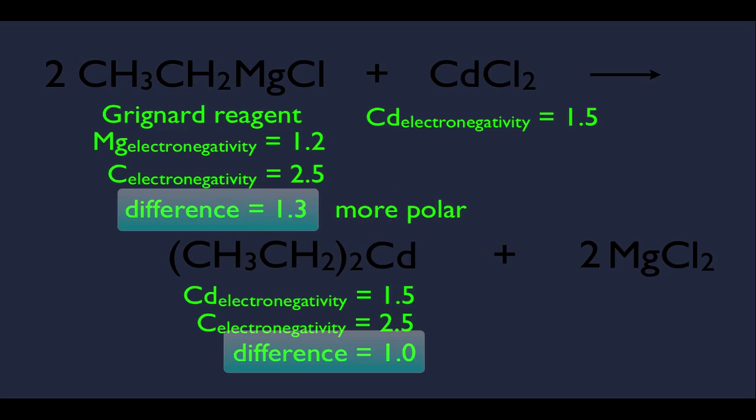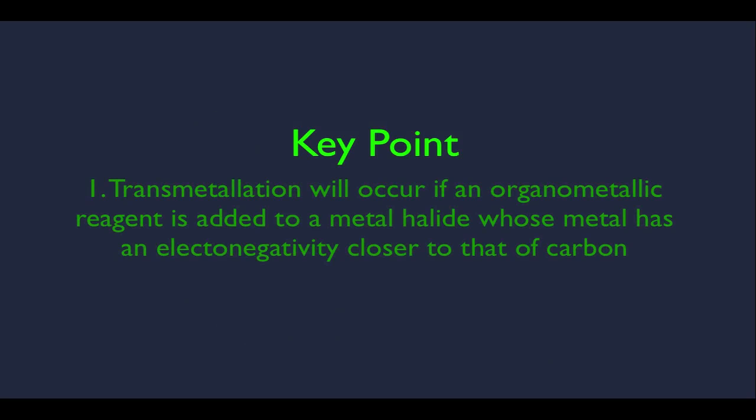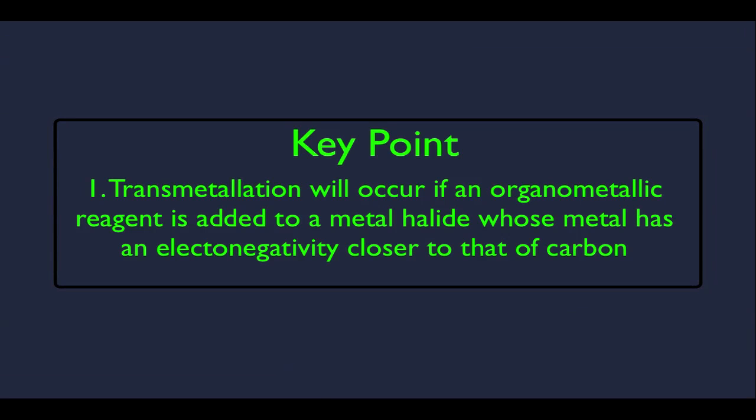So that's all that's happening here. We're starting with a more polar bond as a reactant and ending up with a product that has a less polar bond. There is an incentive for this to happen because less polar is lower energy and reactions love to go to lower energy, to more stability. So there it is. This is our key point. All we're really trying to learn here is that transmetallation will occur if an organometallic reagent is added to a metal halide whose metal has an electronegativity closer to that of carbon. If the metal in the product is closer to that of carbon, then of course that means the difference of their electronegativities would be less. And that's all we're trying to understand here.